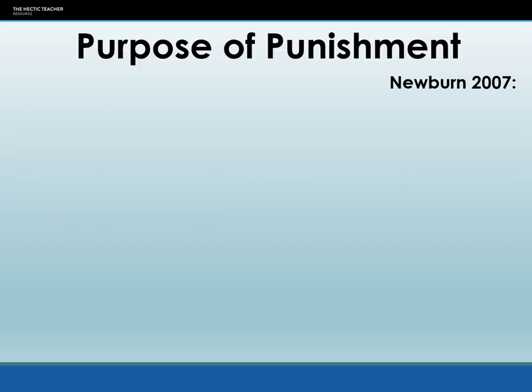Let's start with the idea of why do we punish — what is the purpose of punishment? We're not talking about informal social control here, things like parents grounding you or taking away your pocket money. We're talking about this on a macro level, looking at it from a societal viewpoint. Newburn identifies five purposes of punishment for society — the reasons why we punish people who break the law and break the norms and values of our society.